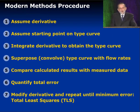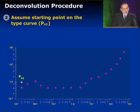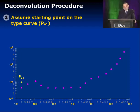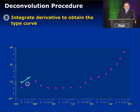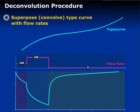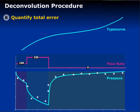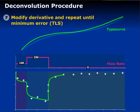I'm going to give you an overall picture of the procedure they've used. Step one: we assume a derivative — it's a pure assumption, we don't know anything about it. Step two: we start somewhere to generate our type curve. Step three: we integrate the derivative to get the type curve. Step four: we convolve that type curve with the multirate history to generate multirate pressure behavior. Step five: we compare that behavior to measured data, quantify the error, and change the derivative's shape until we minimize the error.